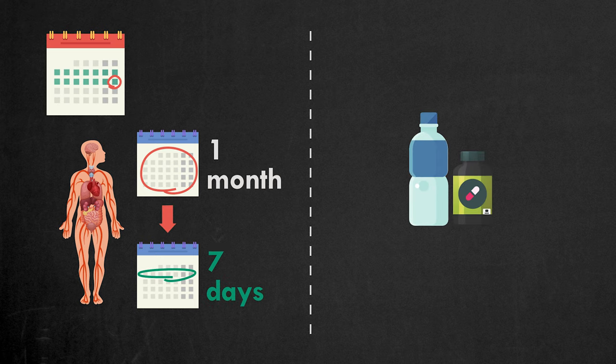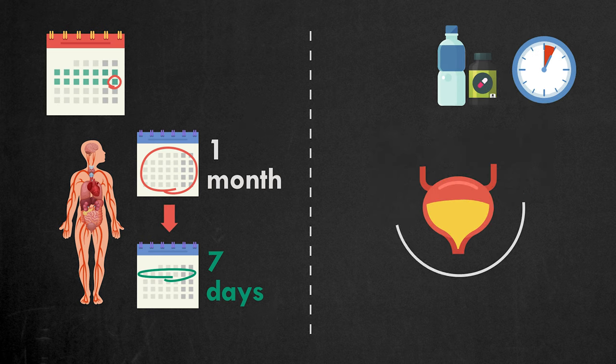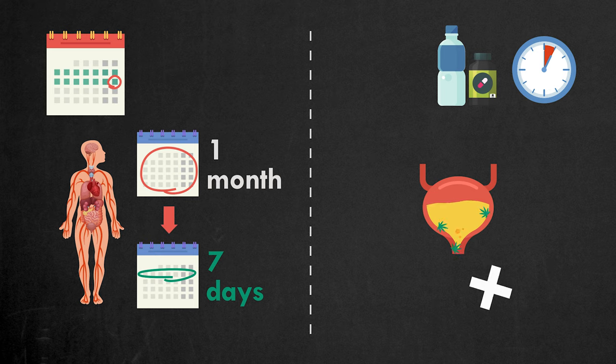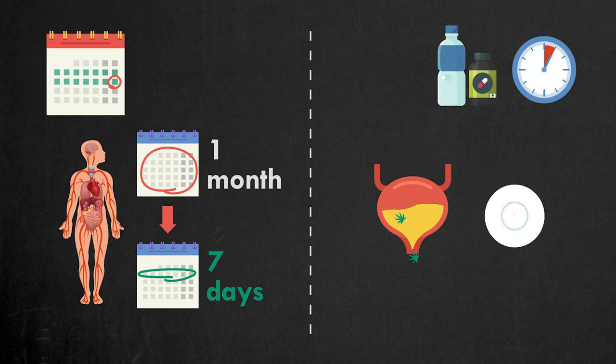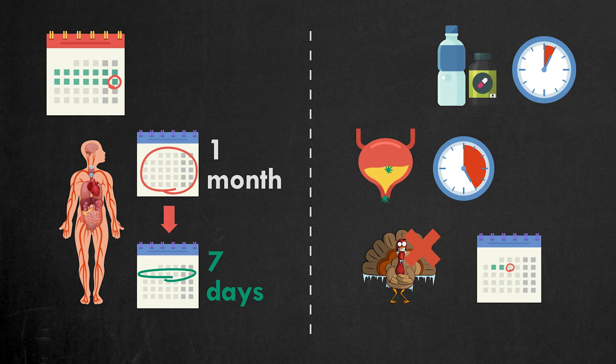The second method is flushing. This method works in just 60 minutes, and the effects are only temporary. Using this method flushes marijuana metabolites out of your bladder, making your urine clean for several hours. The second method works best for people who don't want to go cold turkey or have less than a week before their drug test.